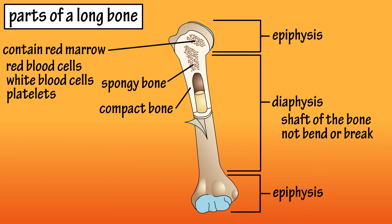You can see at the epiphysis the bone widens out. This is so a joint can be formed with another bone. By the widening out of these bone ends, a larger surface area is created, providing for better joint stability.